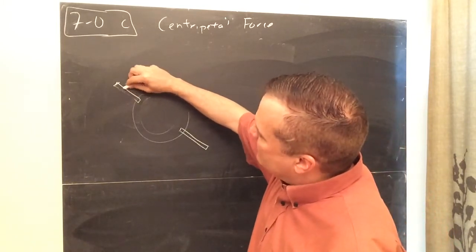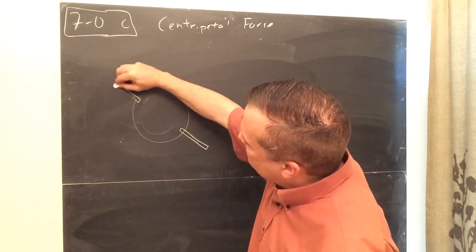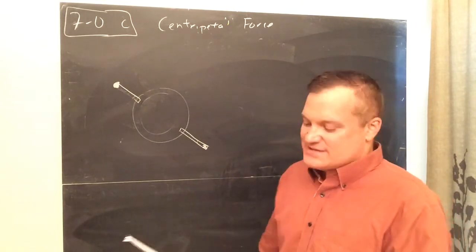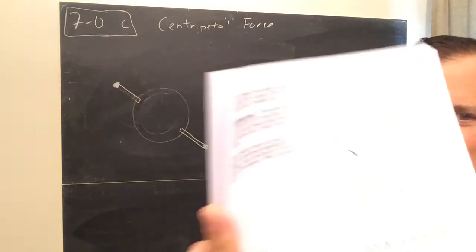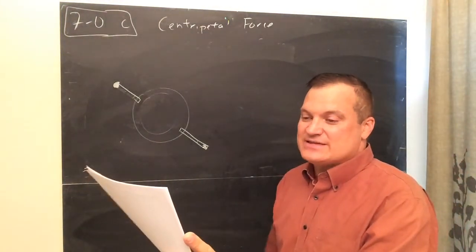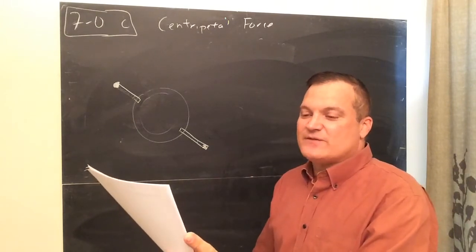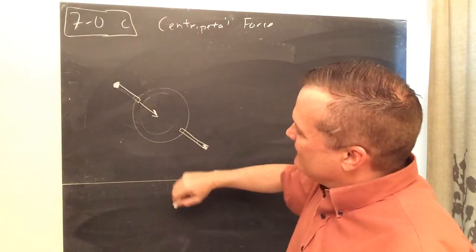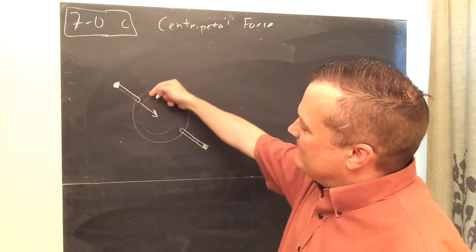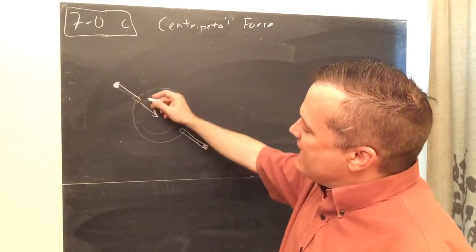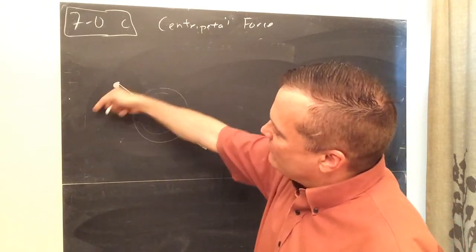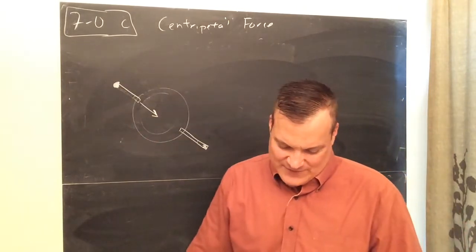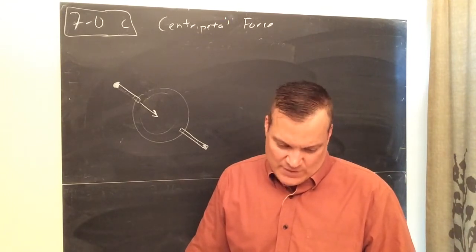So a centrifuge, it spins around. I'll just draw a little, pretend you have a tube here. You always have to have some opposite each other, or it'll be out of balance. And it spins around. What happens is, any particles that are in there, they get moved all the way to here. They get moved to the bottom.